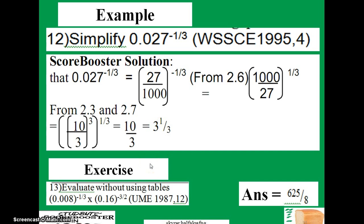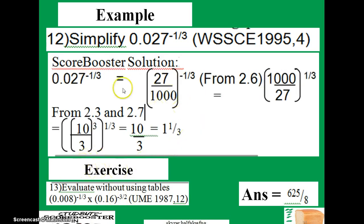If you simplify this further, you're going to have 3 and 1/3. So that is all about this question. You could use the same steps highlighted here to solve this exercise. This is a UME question number 12. The answer is 625/8.